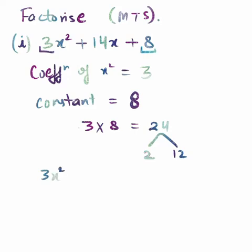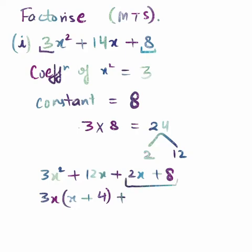See, 3x² would be as it is. Now if you add 12 and 2, you will get 12x + 2x. What you can take common in the first two terms is 3x, so what remains is x in the first and 4 in the second. Then from the last two, what you can take common is 2, so you have x + 4.